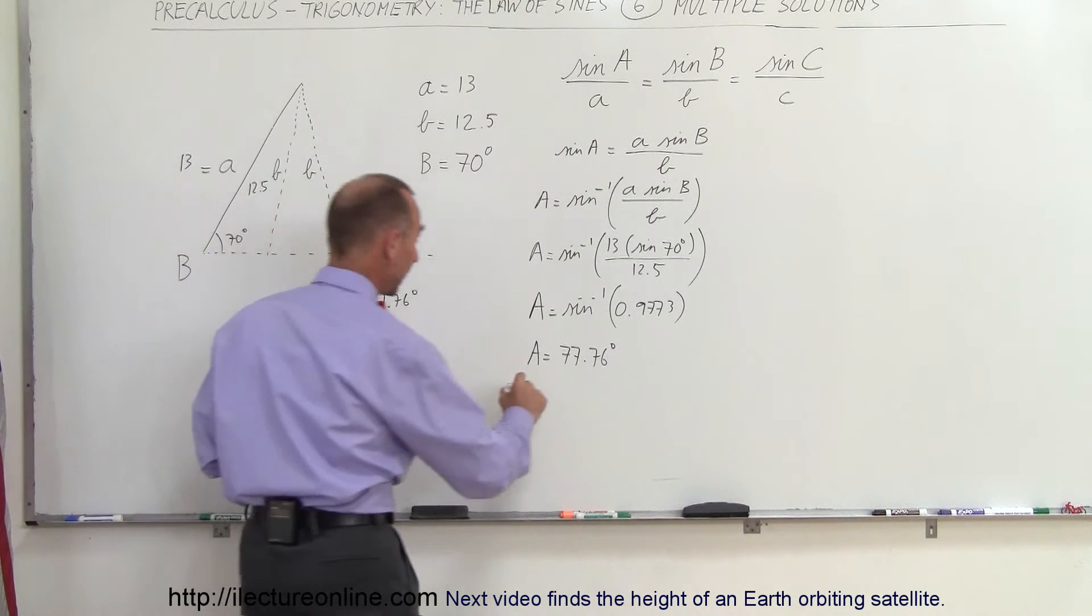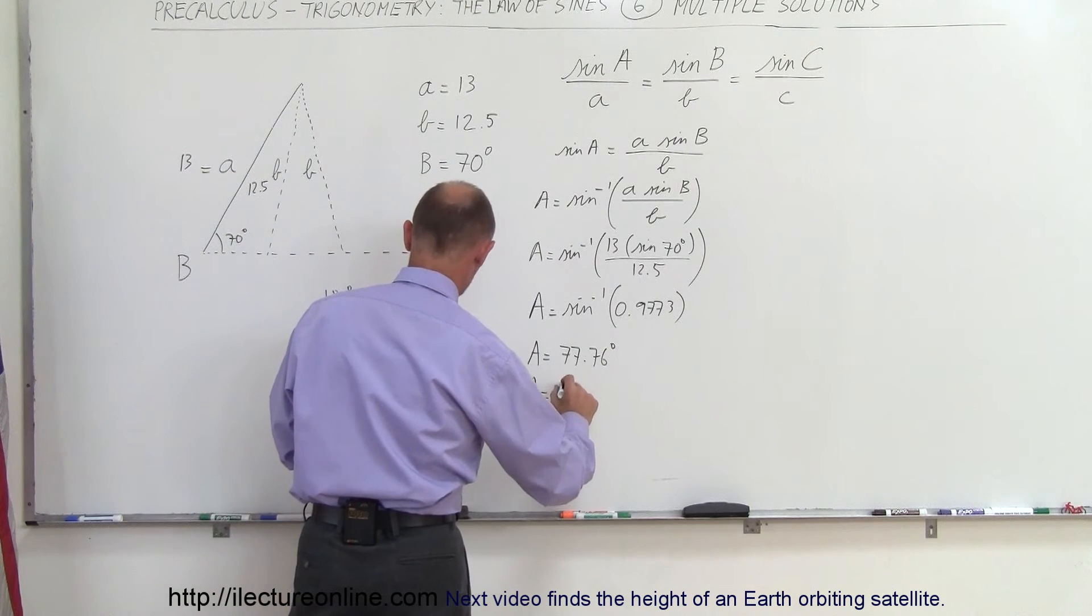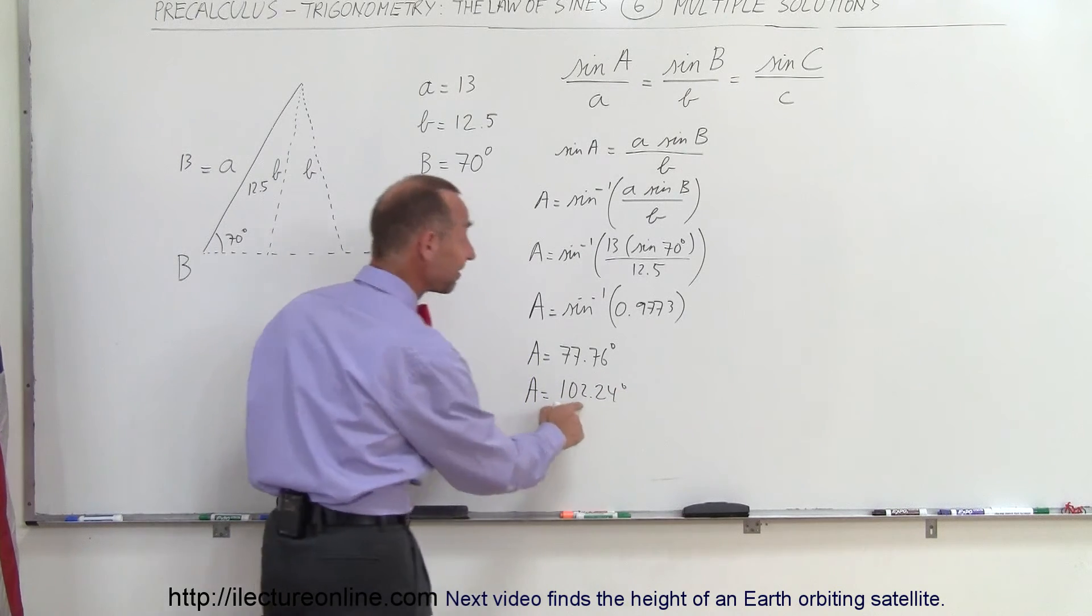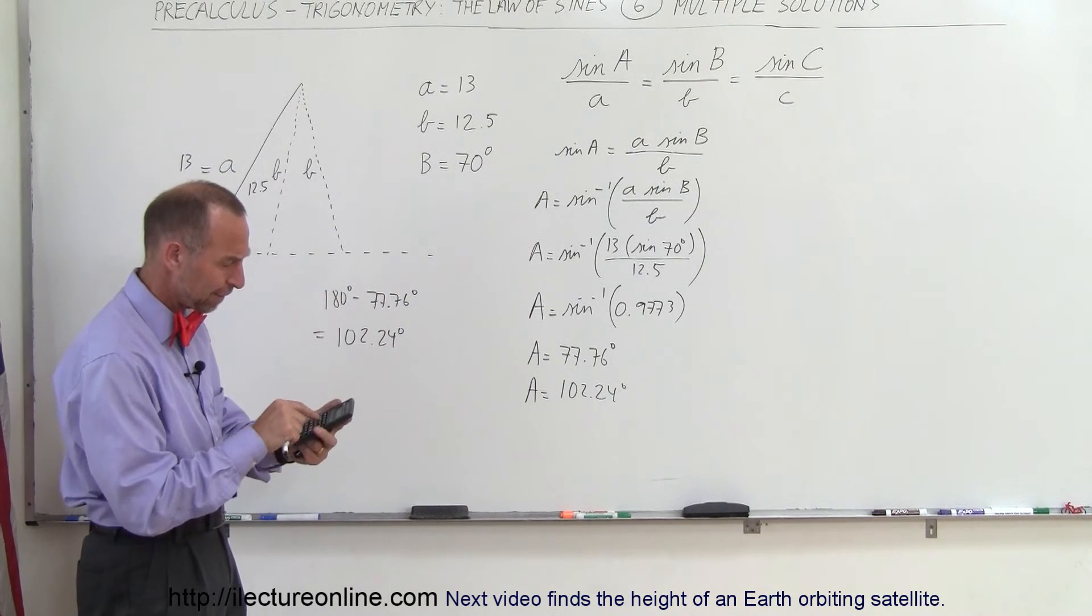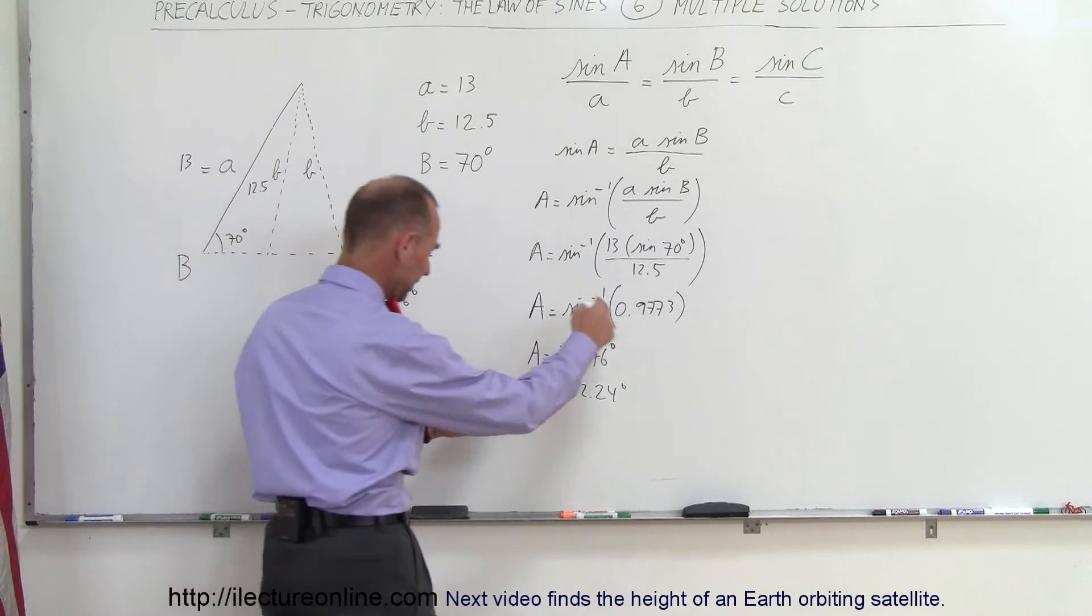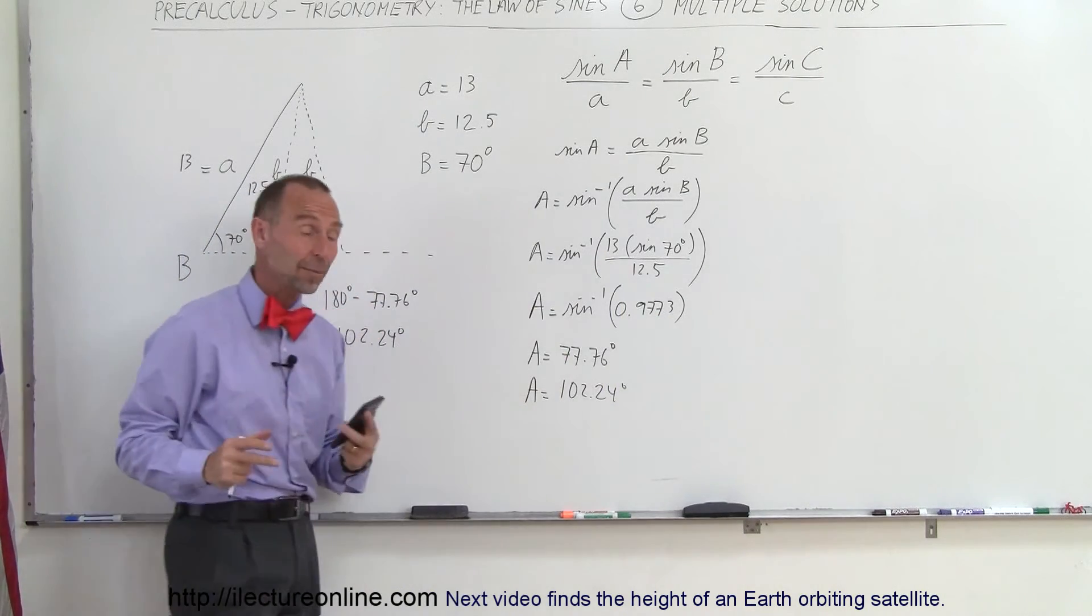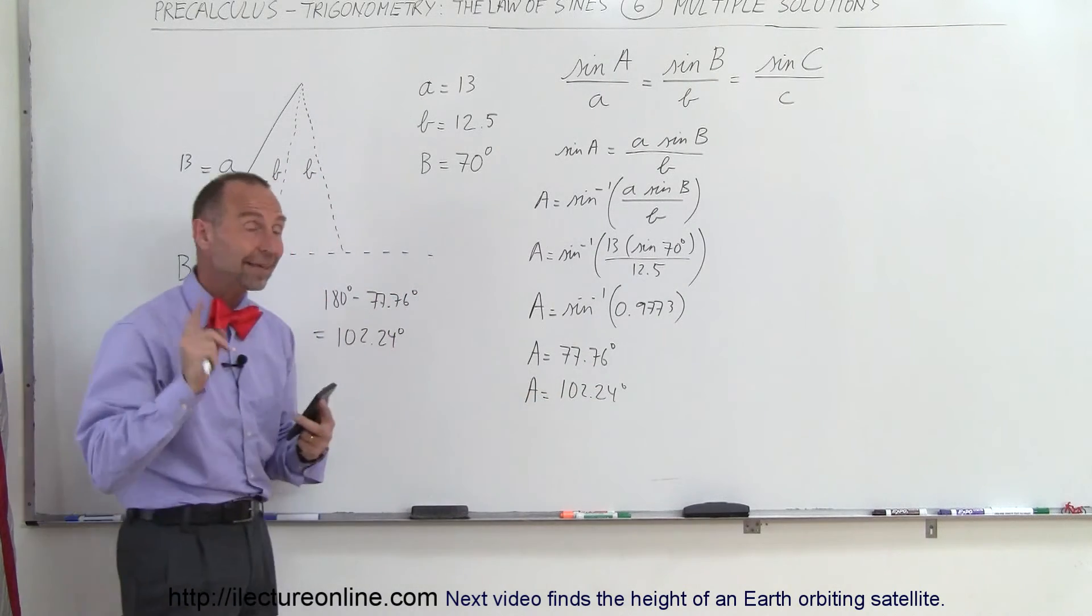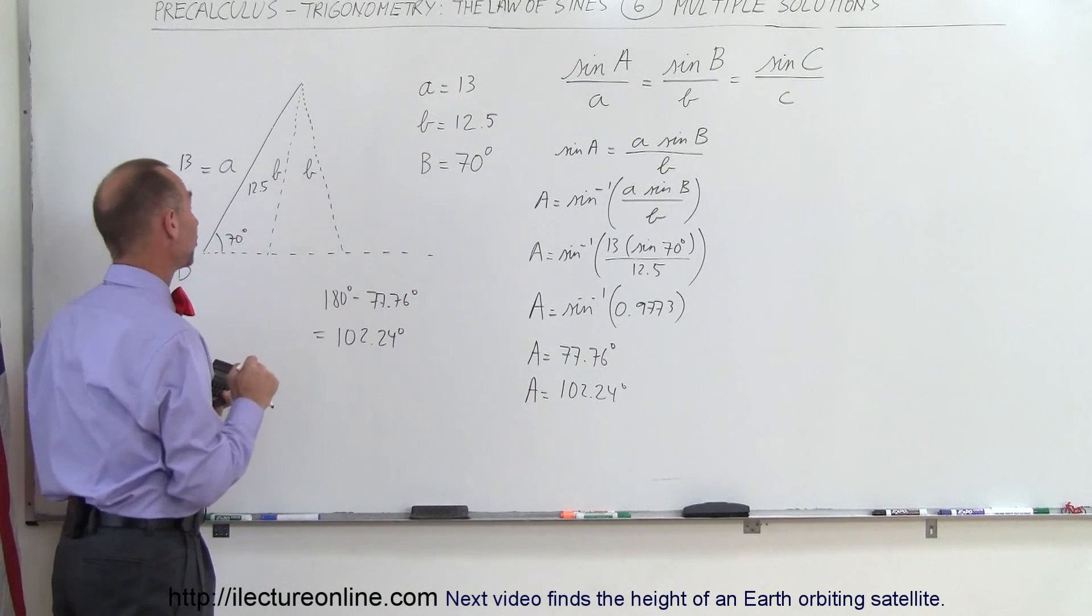Notice angle A could also be 102.24 degrees, because if I take the sine of that, I get exactly 0.9773, the exact same amount. So the inverse sine could be this or could be this, and in this case, both possible answers would be correct.